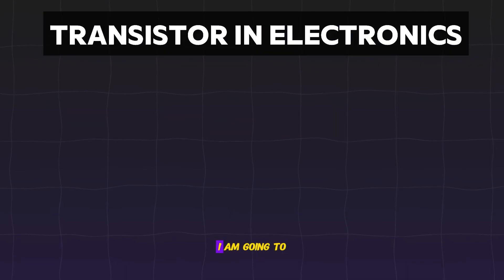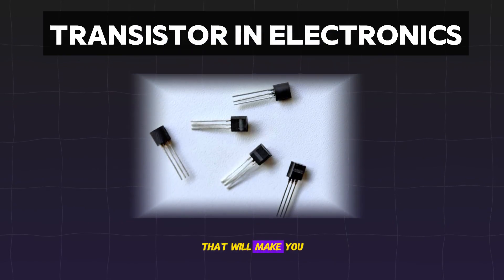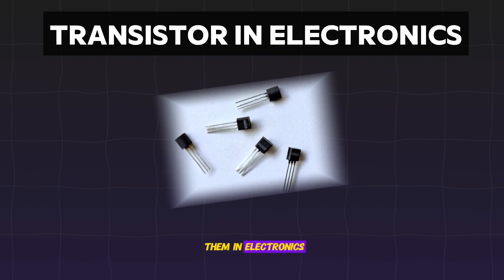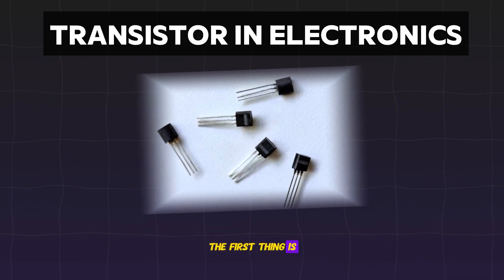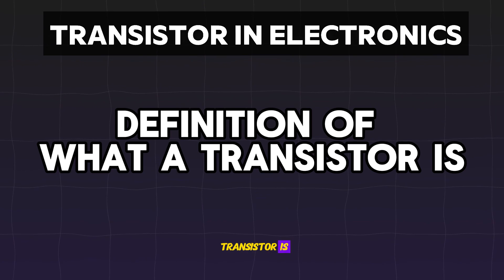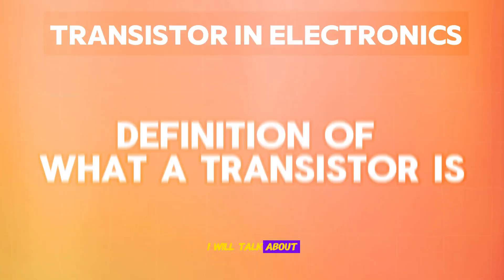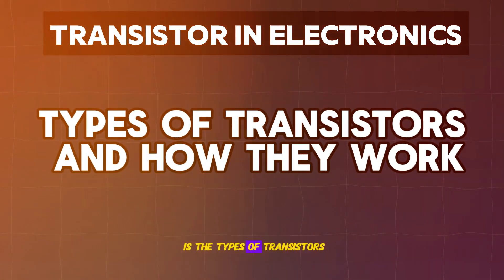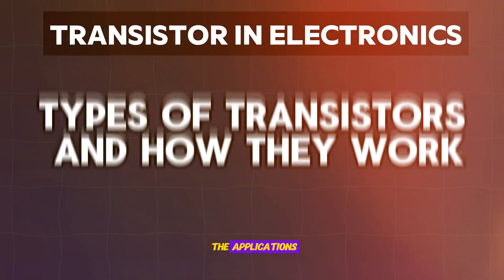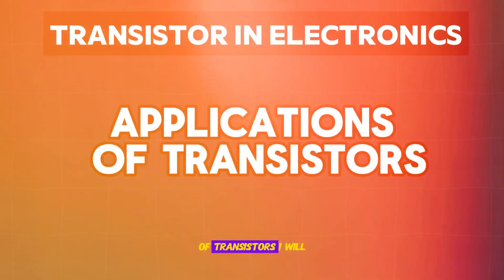Step by step, I am going to cover four different chapters that will make you master transistors in electronics. The first thing is a brief definition of what a transistor is, and the second thing I will talk about is the types of transistors and how they work. The third thing I am also going to talk about is the applications of transistors.